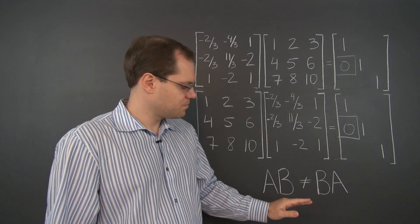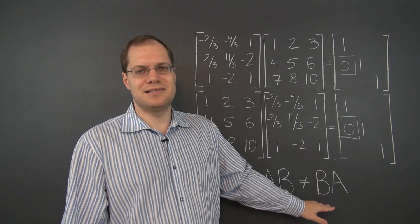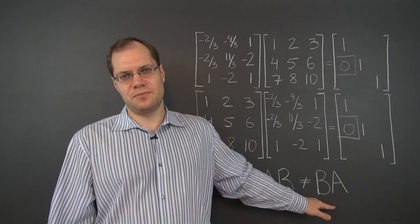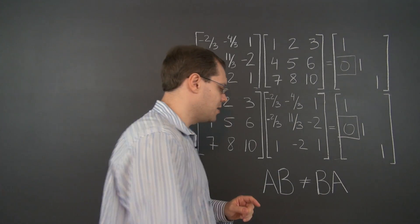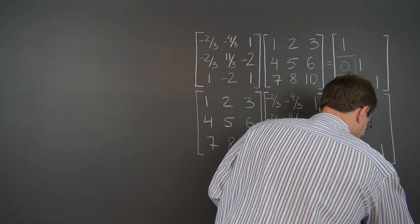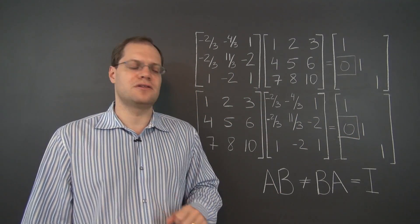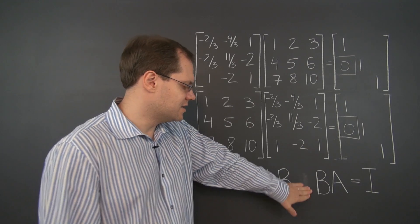So in summary, AB typically does not equal BA. Commutativity does not hold for matrix multiplication. However, when that product equals identity, which means that the two matrices are the inverses of each other, equality does hold.